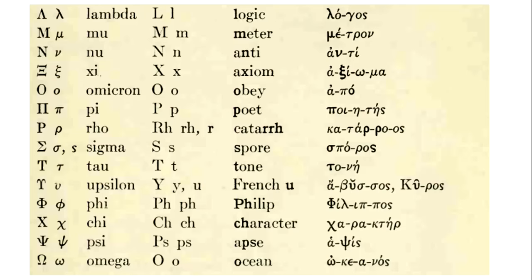Then we have kappa, which we remember through the word 'crisis.' Next we have lambda, which we remember through the word 'logic,' taken of course from the Greek word 'logos,' meaning word, reason, fire — depending on which philosophy you're reading it might have various meanings. But you can see we're already learning the philosophical vocabulary we'll need moving forward.